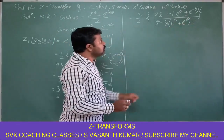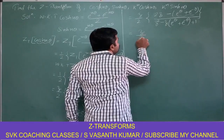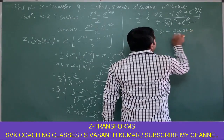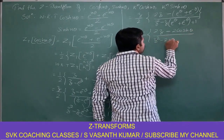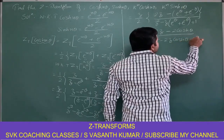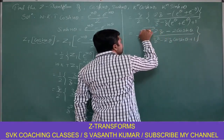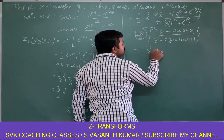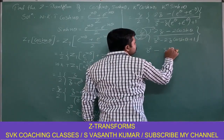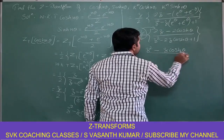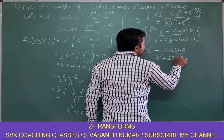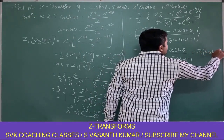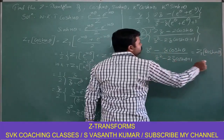Since e power n theta plus e power minus n theta equals 2 cosh(θ), it becomes z by 2 times of 2z minus 2 cosh(θ), all divided by z squared minus 2z cosh(θ) plus 1. Multiplying z by 2 into the numerator, the 2 by 2 cancels, giving z squared minus z cosh(θ) all divided by z squared minus 2z cosh(θ) plus 1. This confirms the Z transform of cosh(nθ).